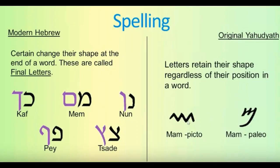Another thing to note is that in the original Yahudiith language, the letters retain their shape regardless of their position in a word. However, in modern Hebrew certain letters change their form at the end of a word — these are called final letters. You see this in the Kaf, the Mem meaning water, the Nun, the Pe or Pa meaning mouth, and the Tzad — how they all change shape and form in modern Hebrew.